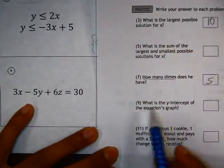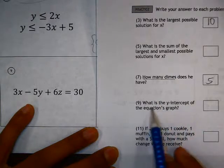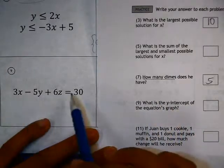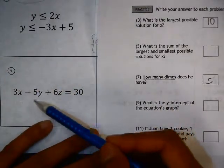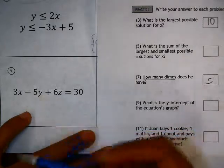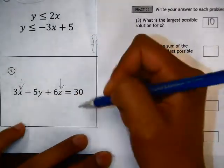Number 9, the question you're being asked is, what is the y-intercept of the equation's graph? Here's your equation. We know that the y-intercept has an x and a z value, both of 0.